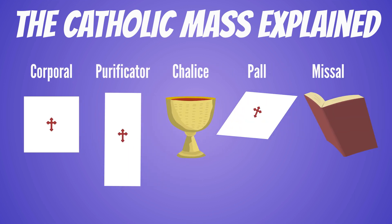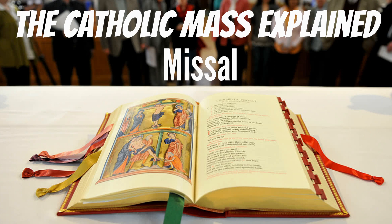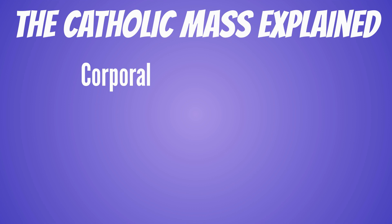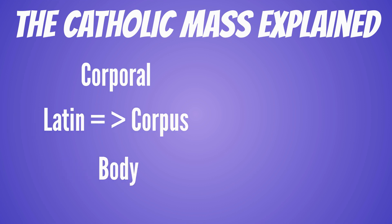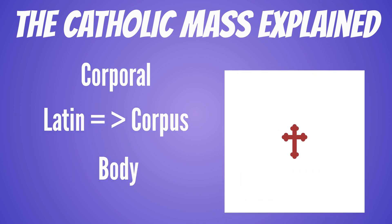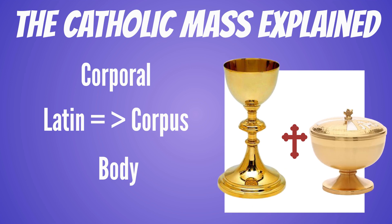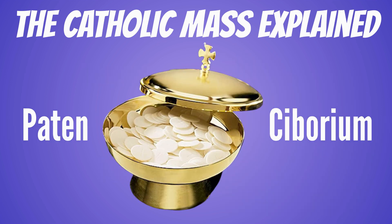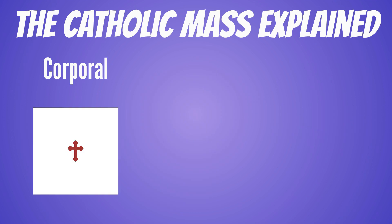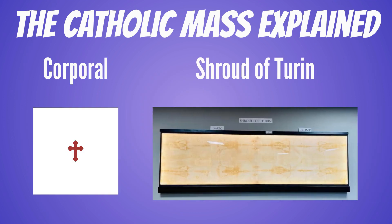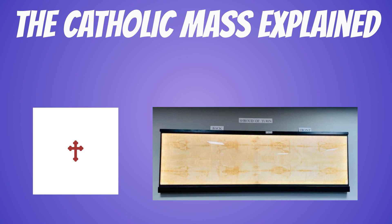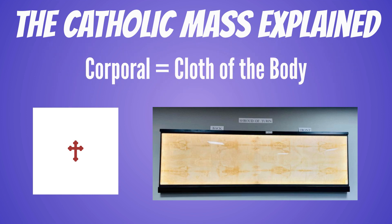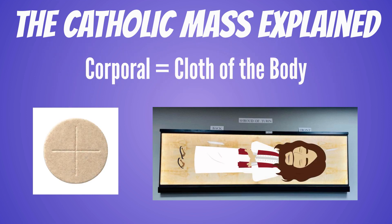We'll explain them one by one. The missal is the book containing the words and prayers used in the Catholic Mass throughout the year. The corporal comes from the Latin word corpus, meaning body. This is a square white linen cloth upon which the chalice and paten are placed. The corporal is a reminder of the cloth that would have wrapped around Jesus in his tomb — corporal literally means the cloth of the body, so the body of the Lord is going to rest there, just as the body of the Lord was wrapped in a cloth in the tomb.